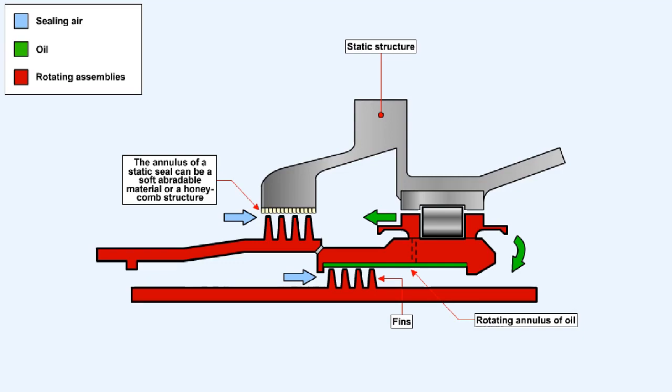In the case of the abradeable material or honeycomb structure, initial running of the engine makes the fins rub against the annulus material, cutting into it to give the minimum clearance.